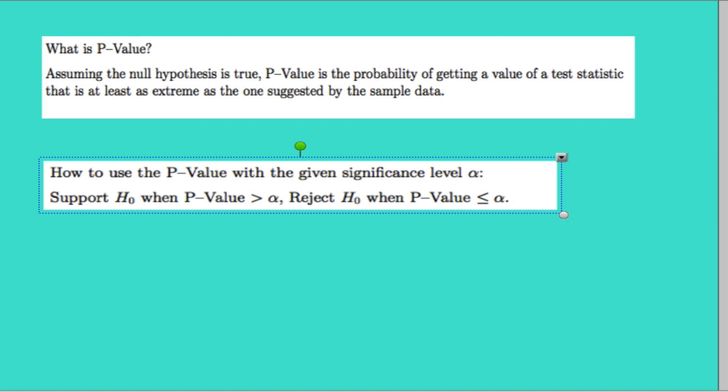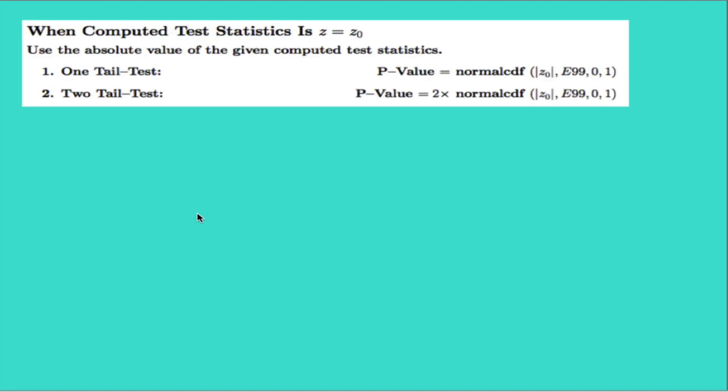Let's look at some examples in different cases. Our first example is when the computed test statistic is z. If the computed test statistic is negative, we're going to use the fact of symmetry in the normal distribution and use the positive value of the computed test statistic. Then we use the normal CDF to find a corresponding area which translates to probability.